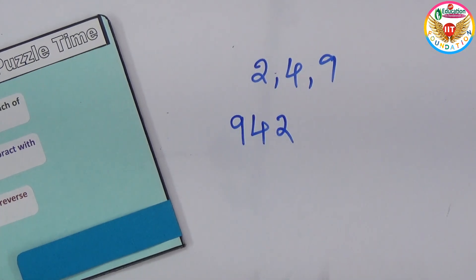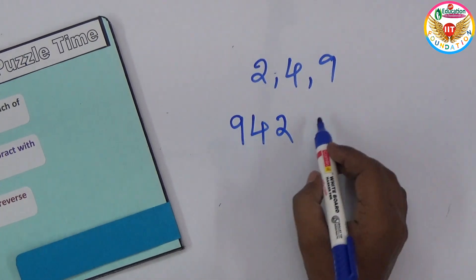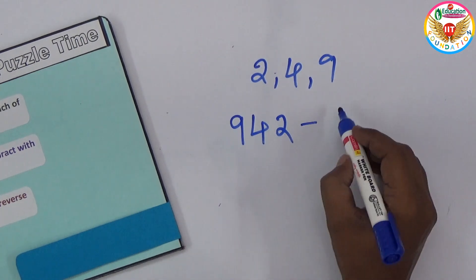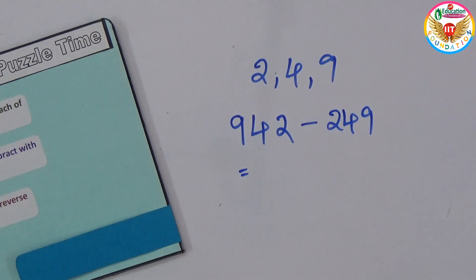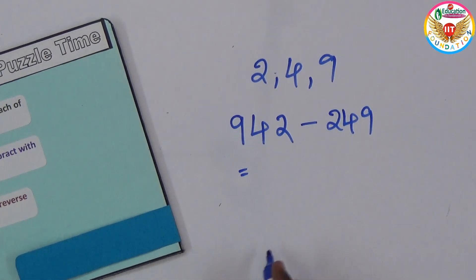We should subtract with the reverse of this. 942 reversed is 249. If you subtract 942 minus 249, that is 693.